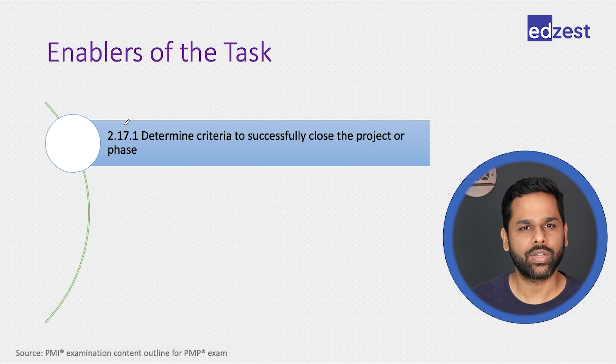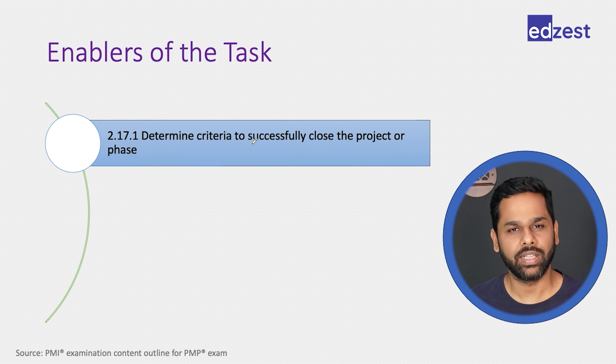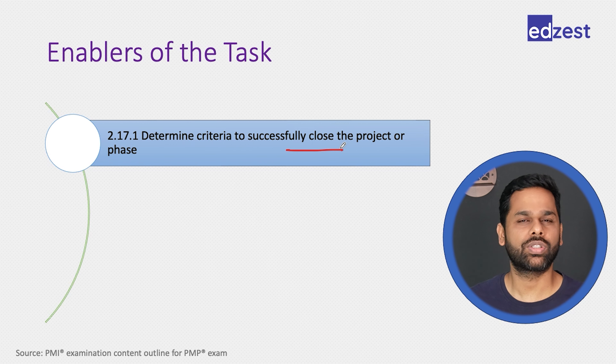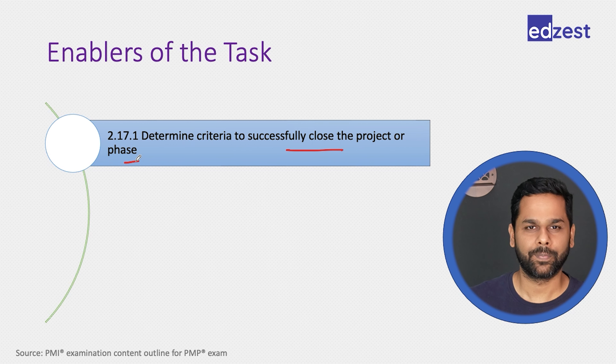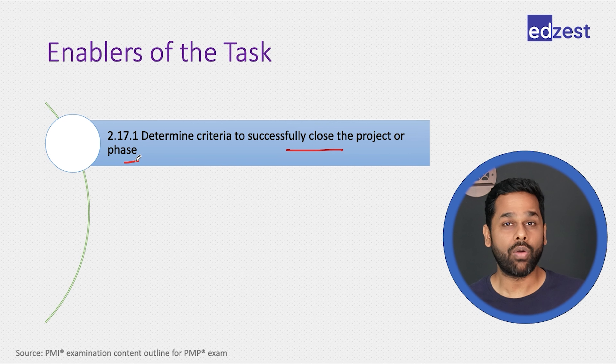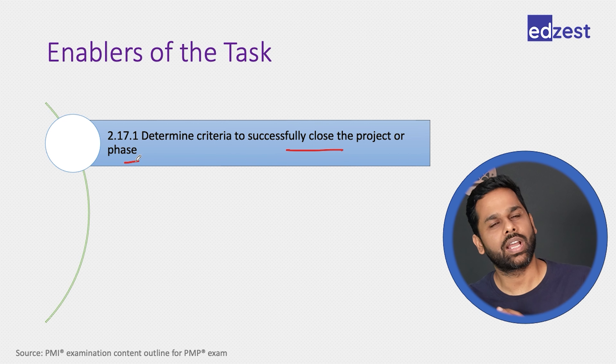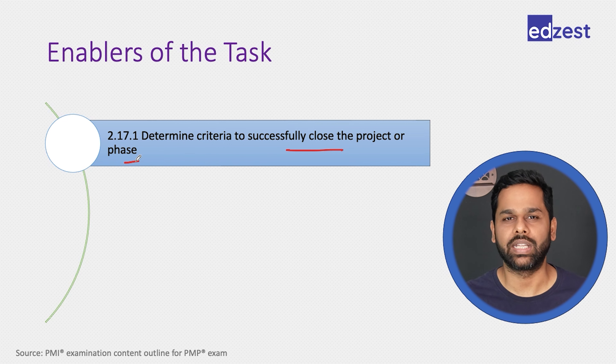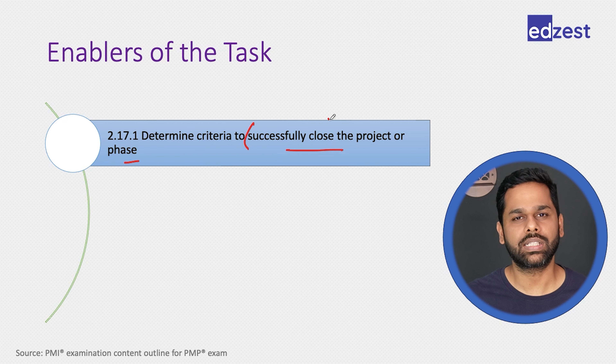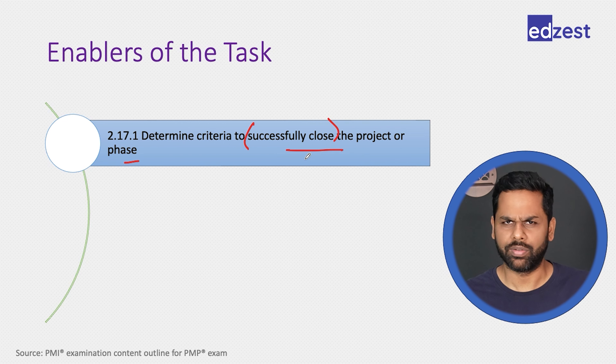Just like all other tasks that we have covered in the people domain and in the process domain, we will first look at the enablers, try to understand those, and then look at the questions. The first enabler talks about determining criteria to successfully close the project or a phase. How would we know that the project has closed? What is that success criteria that would tell us we can close this project or a phase?